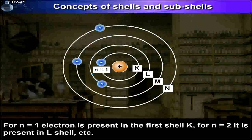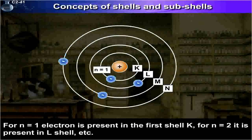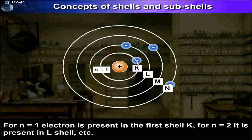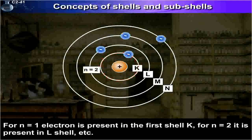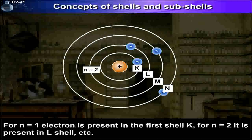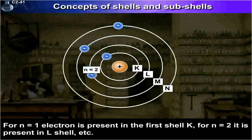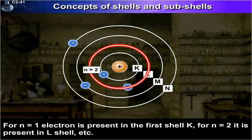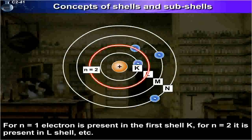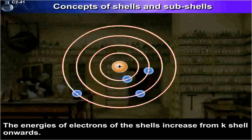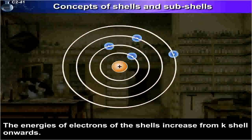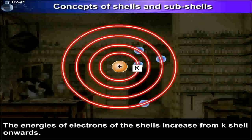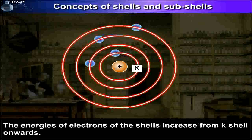For N equals 1, the electron is present in the first shell K. For N equals 2, it is present in the L shell, etc. The energies of electrons in the shells increase from K shell onwards.